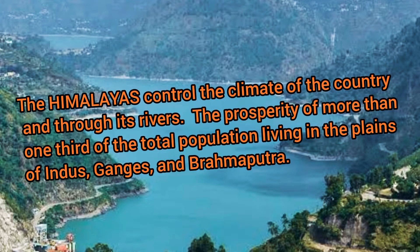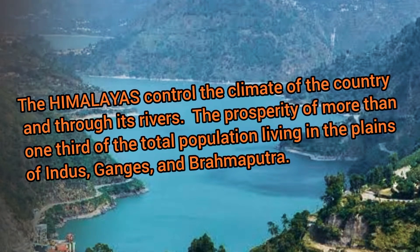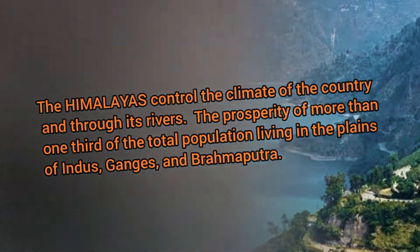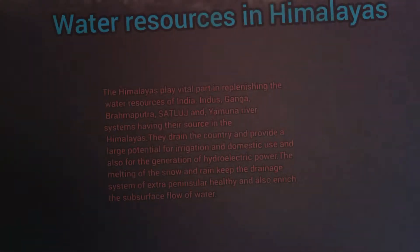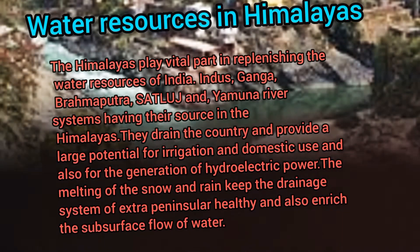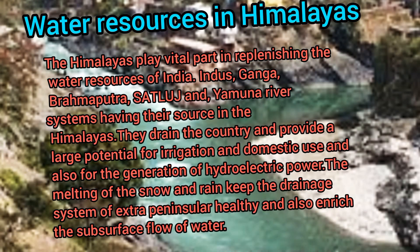The Himalayas control the climate of the country and through its rivers the prosperity of more than one third of the total population living in the plains of Indus, Ganga and Brahmaputra. The Himalayas play a vital part in replenishing the water resources of India — Ganga, Sindhu, Brahmaputra, Yamuna and Satluj rivers have their sources in the Himalayas.